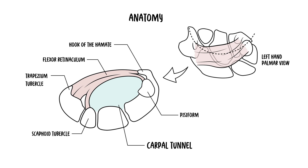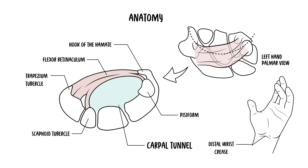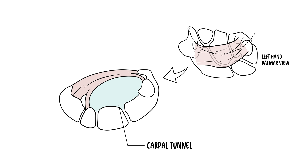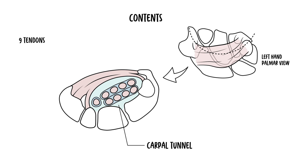To locate the carpal tunnel on yourself, the distal wrist crease serves as an excellent landmark aligning with the tunnel's entrance. Now, the components of the carpal tunnel: the carpal tunnel houses 9 tendons enveloped in synovial sheaths, facilitating their smooth movement alongside the crucial median nerve.